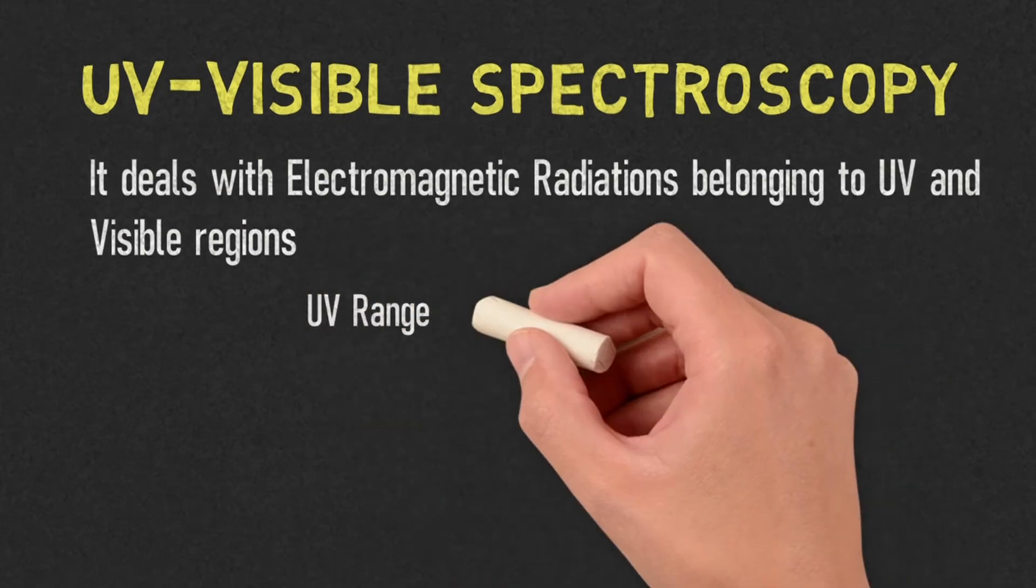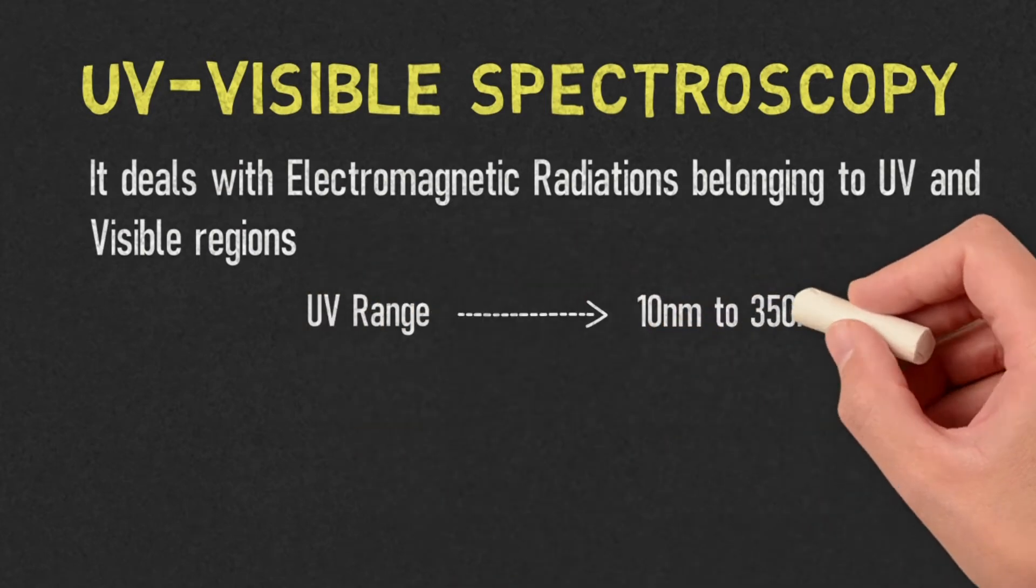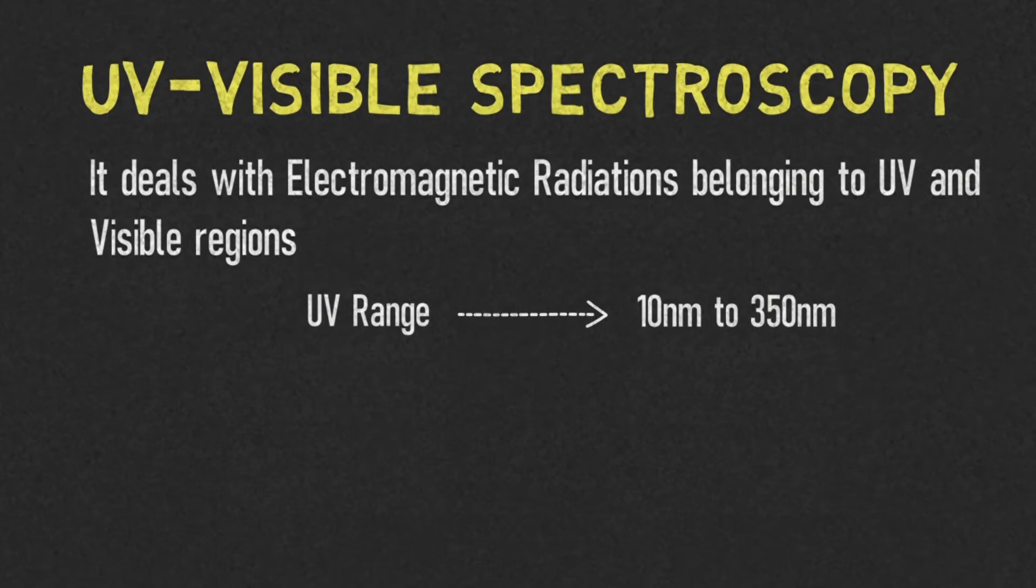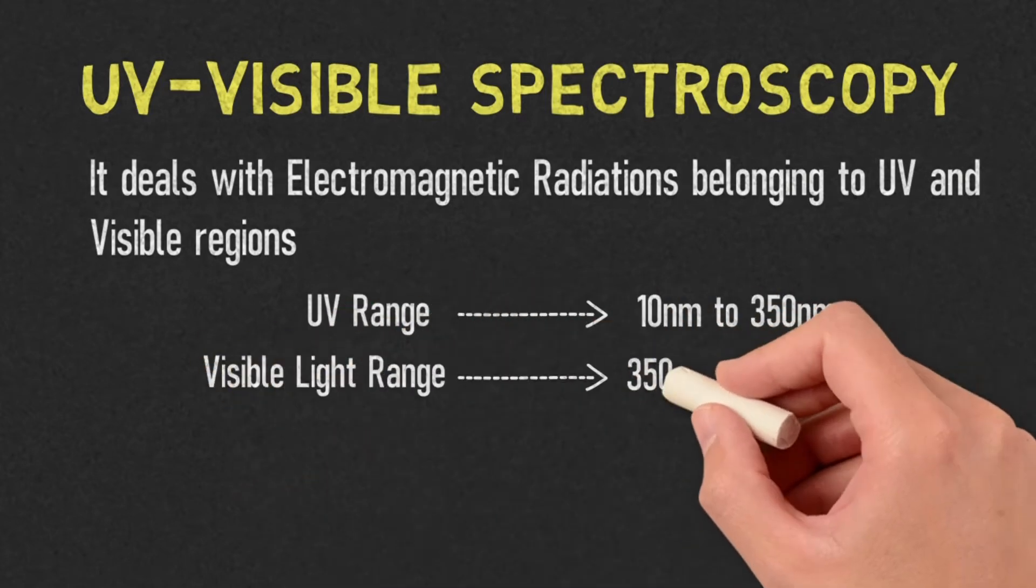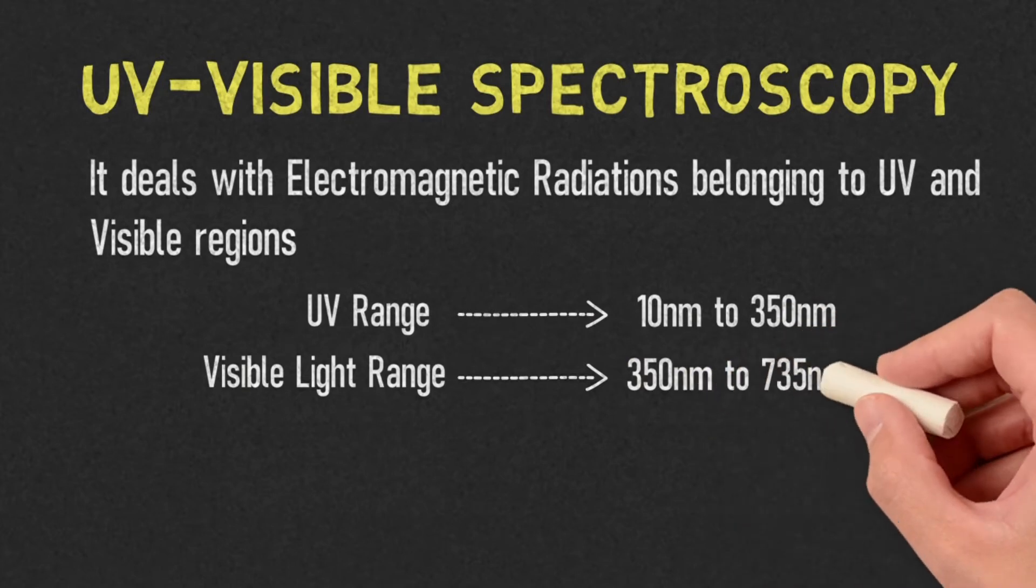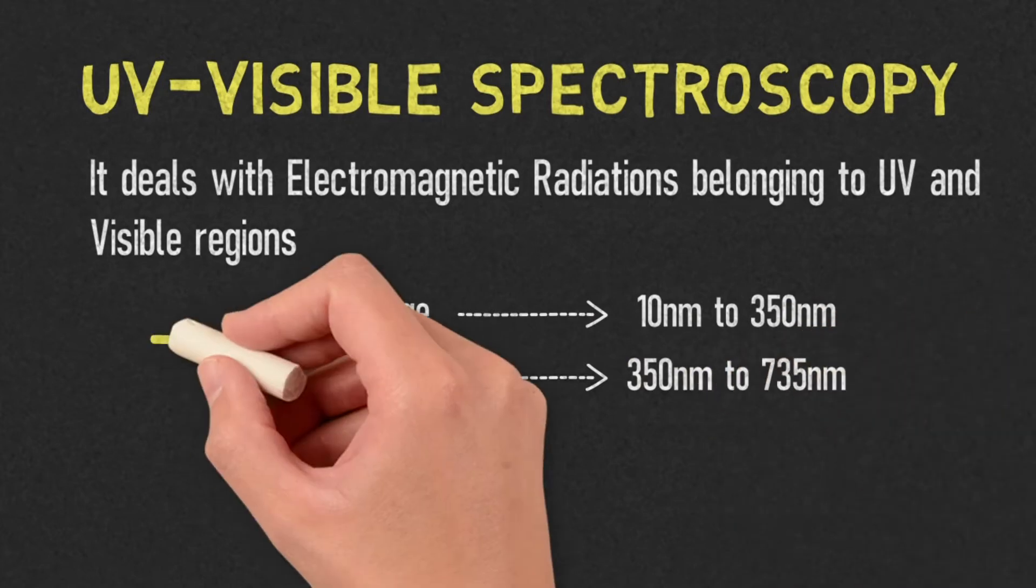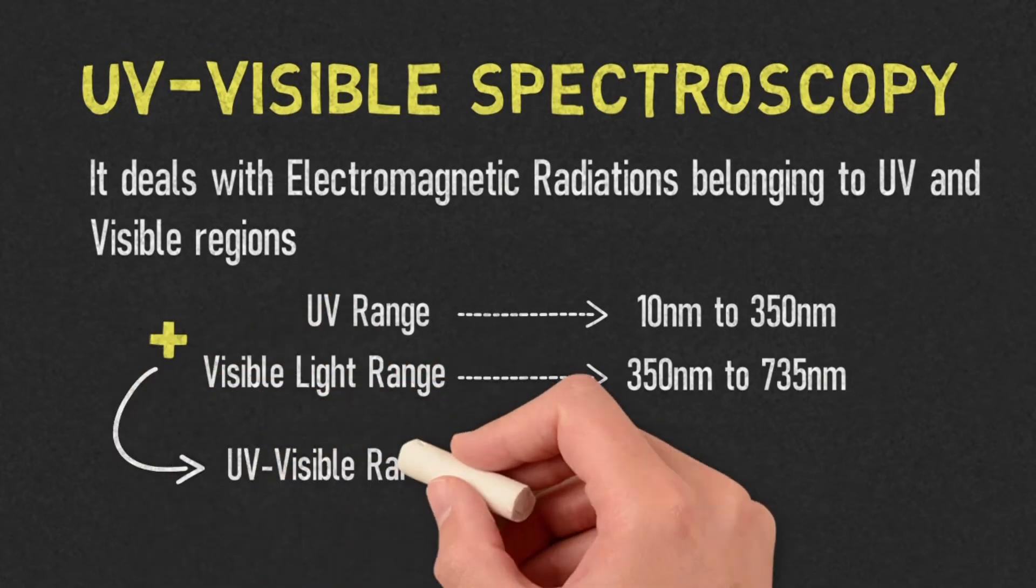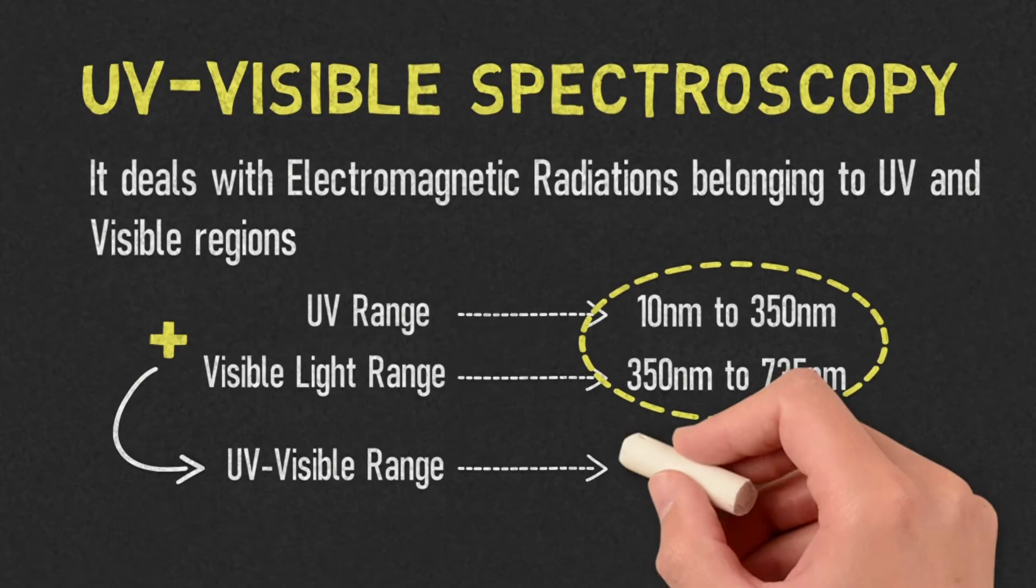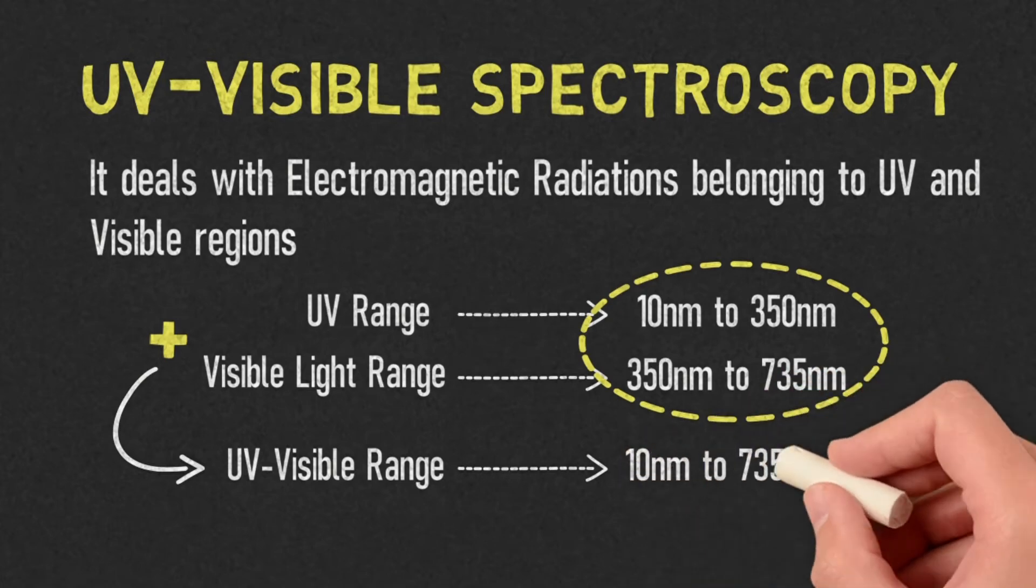We know the UV range is from 10nm to 350nm, and the visible light range is from 350nm to 735nm. By adding the UV range and the visible light range, we get the UV-visible range, which is from 10nm to 735nm.